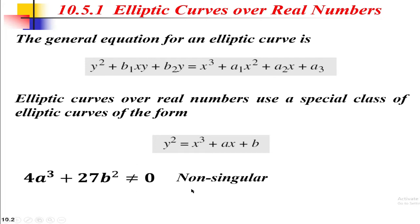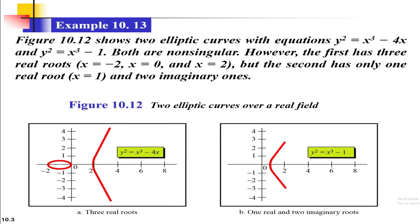If 4a³ + 27b² = 0, then it is called a singular elliptic curve equation. In the non-singular case, this equation has three distinct roots, but in the case of a singular elliptic curve equation, the equation does not have three distinct roots.